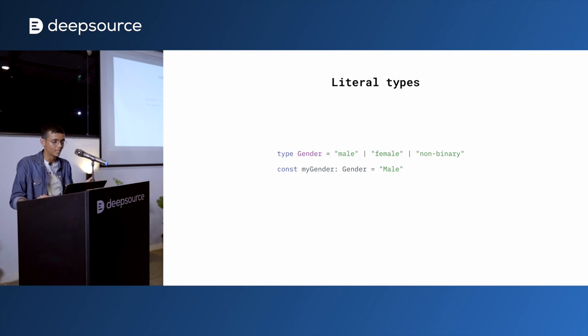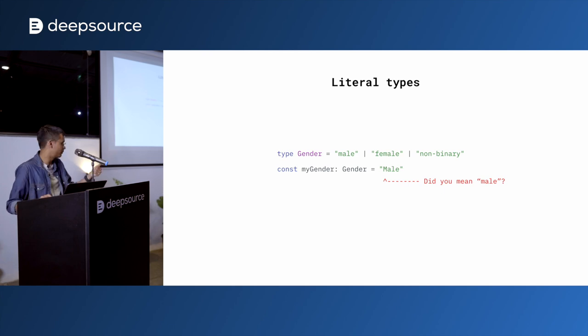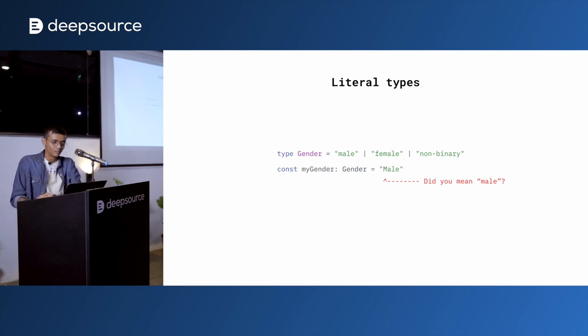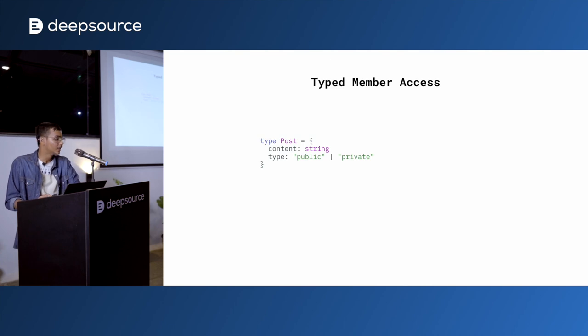So if I try to compile this, the compiler will help me out and it will say, hey, perhaps you meant to say male with a small m.